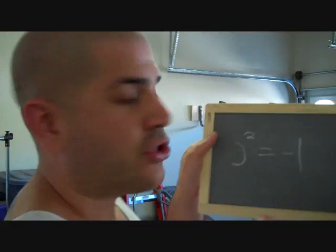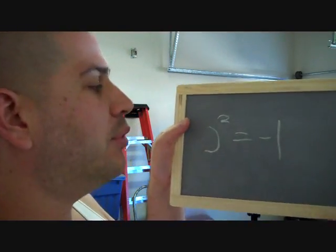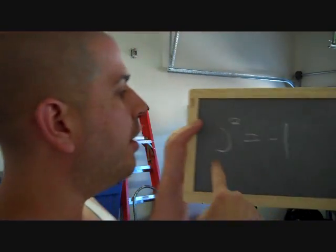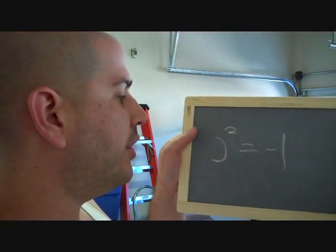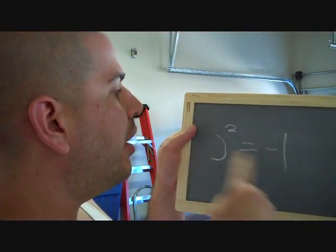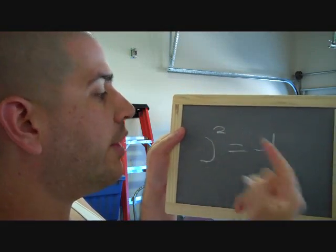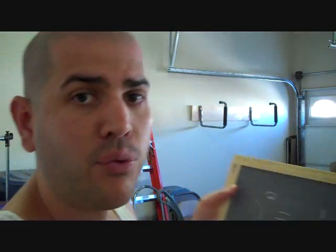The reason it's so famous is because it's absolutely unsolvable in the regular number system — that is, with negative numbers, positive numbers, and zero, there's no answer to this equation. No number squared equals negative 1.